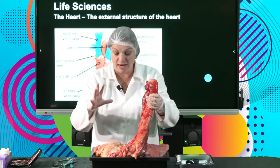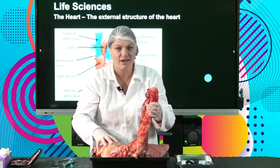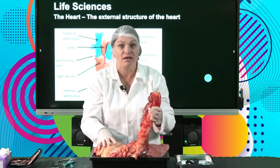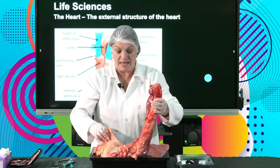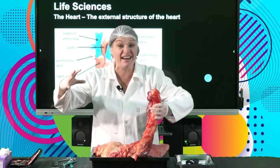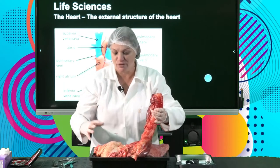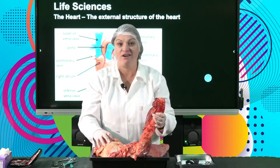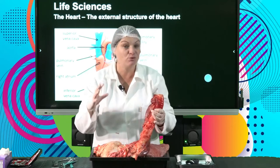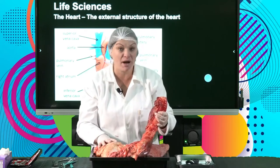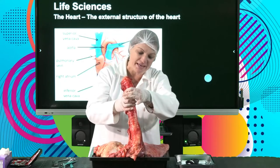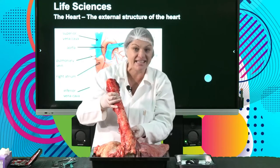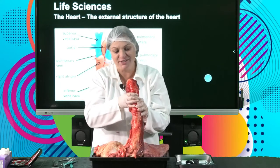Just before we start, I just want to make sure that you guys know this is from an ox. Lots of kids say to me, 'Is that a human?' No, guys — we can't do that, you're not allowed to kill somebody. This is an ox — it's a really, really big animal. So what am I holding in my hand? This is a trachea, your windpipe. It's this nice hollow tube and this is where all our air is going to go down.